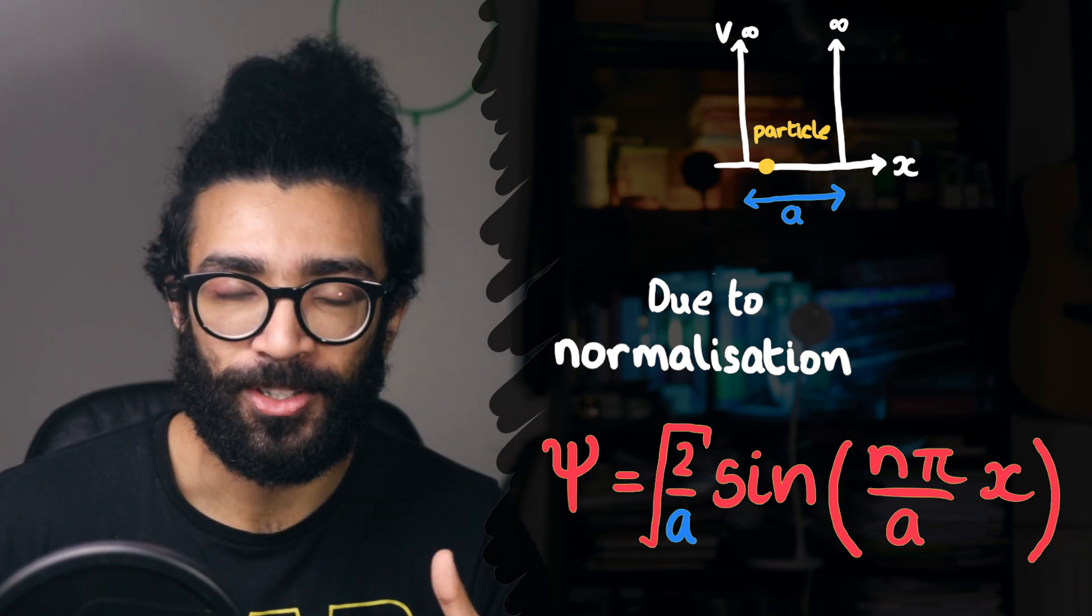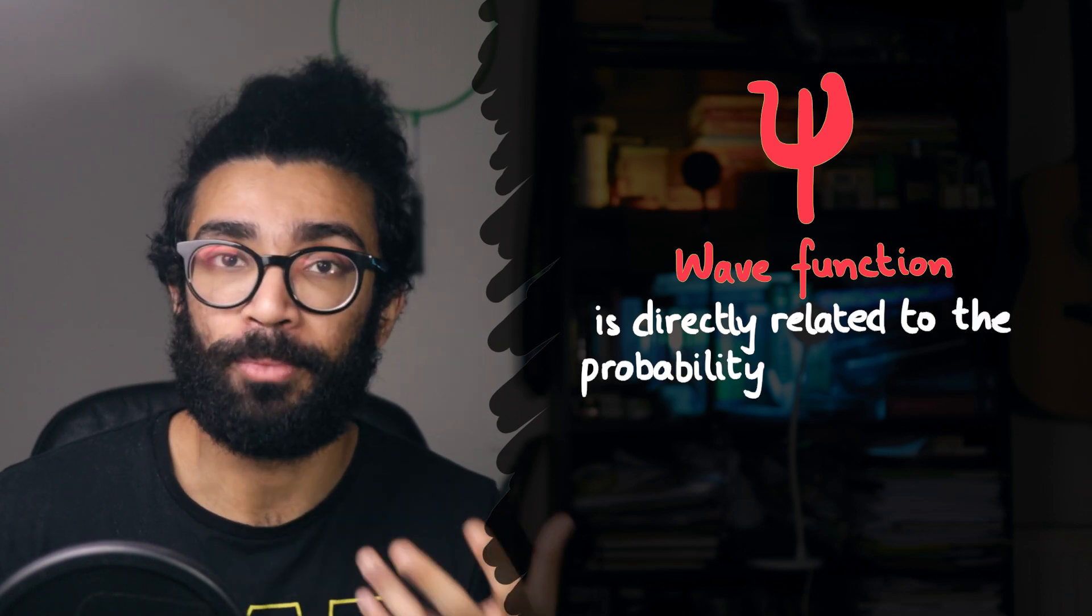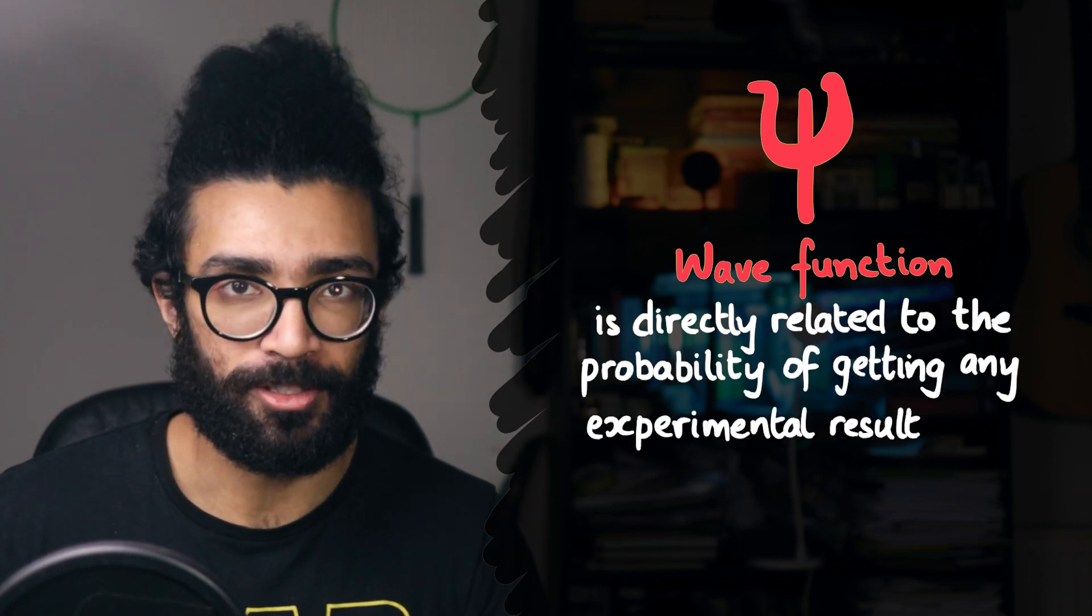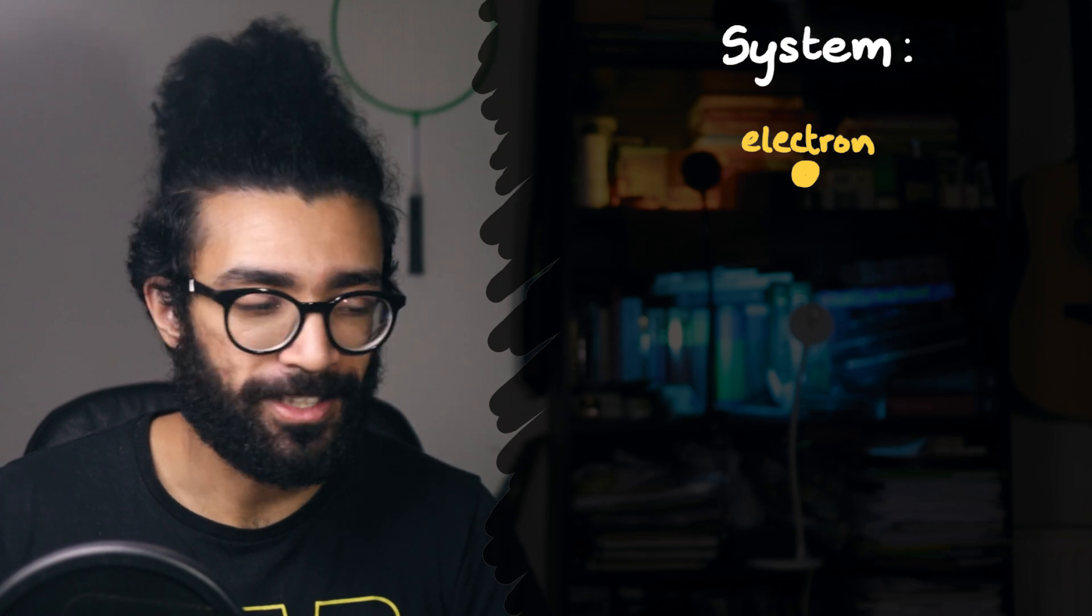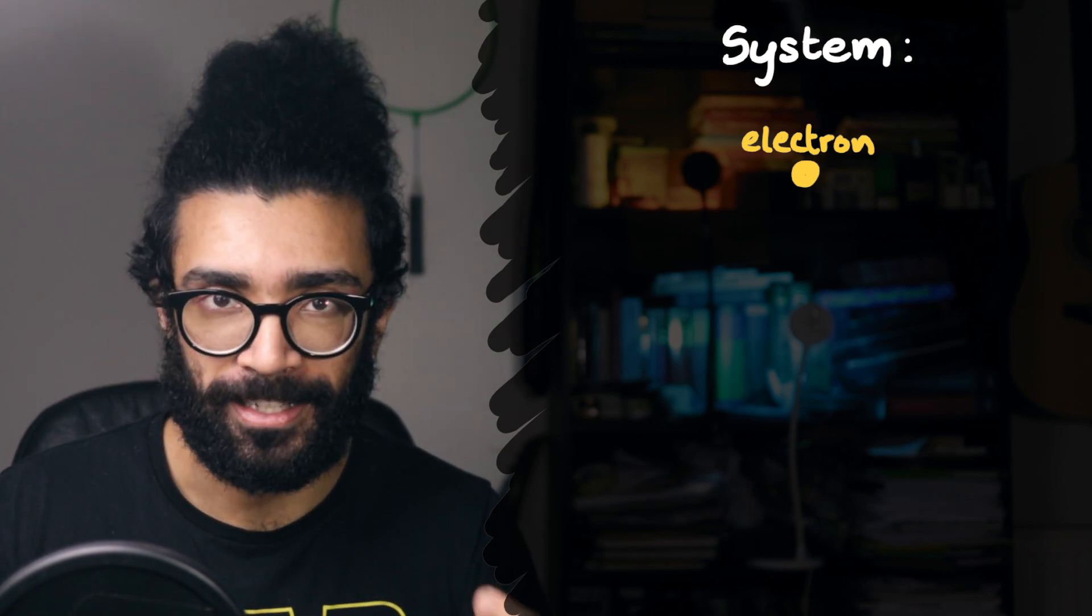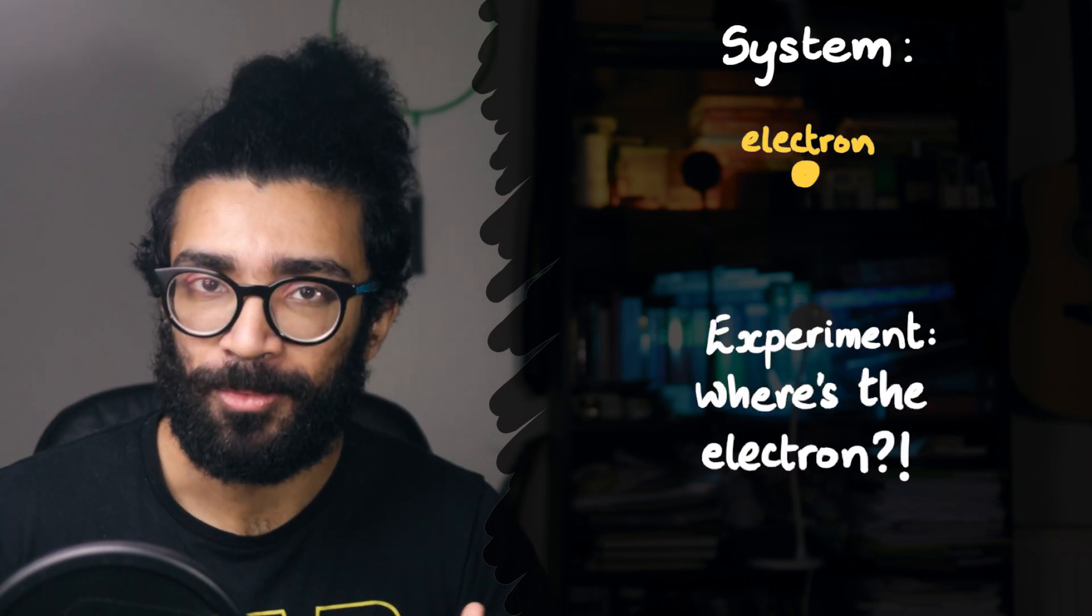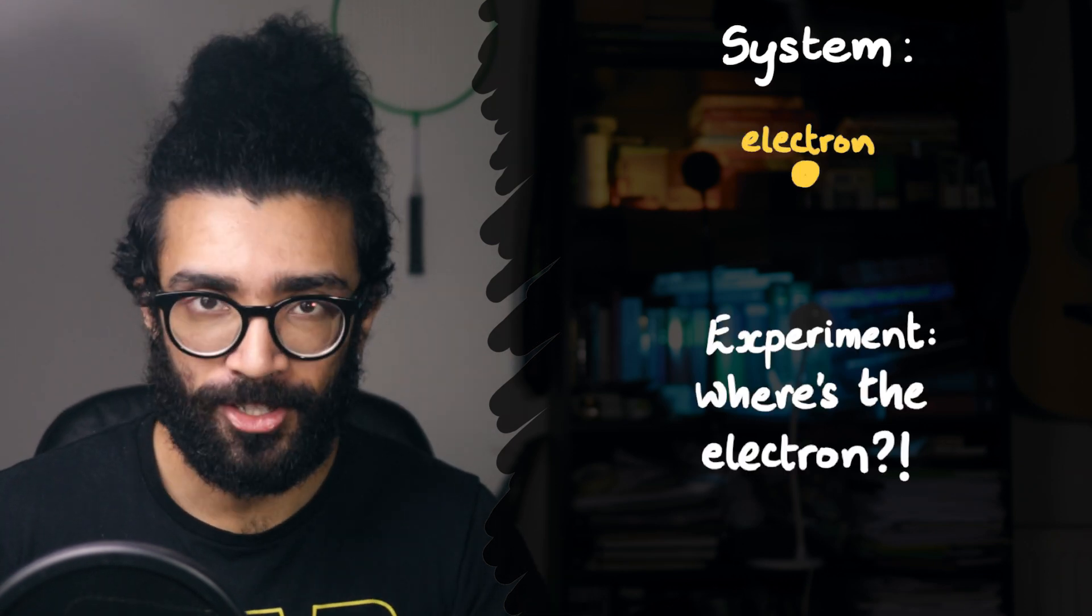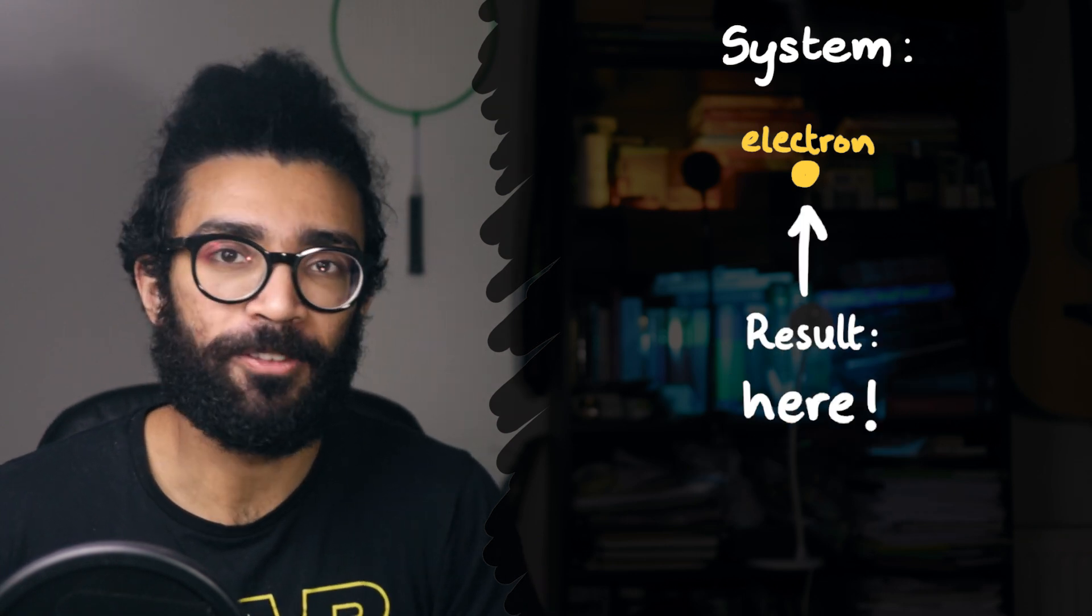To understand normalization, we first need to recall that the wave function is directly related to the probability of getting any experimental result when we make a measurement on our system. For example, if our system is a single electron, which in these videos is my favorite system to talk about, then the wave function is directly related to the probability of us finding that electron in different regions of space.